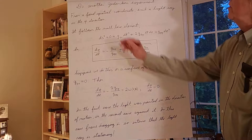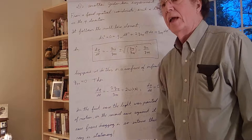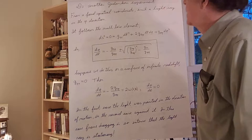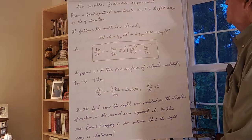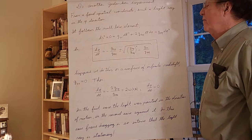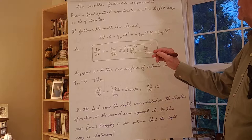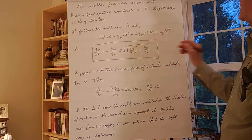Let me do another gedanken experiment. For a fixed spatial coordinate, I'll look at my light cone by emitting a light ray in the phi direction — either along or opposing the direction of rotation. A light ray follows a null line element, ds squared equals zero. The parts of the metric that contribute are the g_phi_phi d phi squared, the 2 g_t_phi dt d phi, and the g_tt dt squared terms. Dividing by dt squared gives a quadratic equation for d phi/dt. Solving it, I get d phi/dt equals minus g_t_phi over g_phi_phi plus or minus the square root of that ratio squared minus g_tt over g_phi_phi.